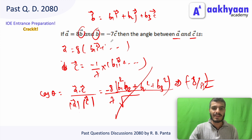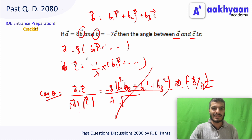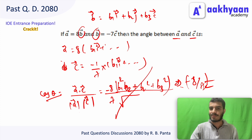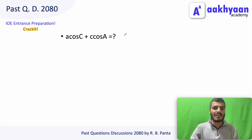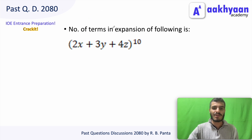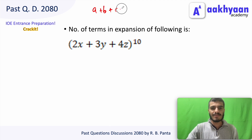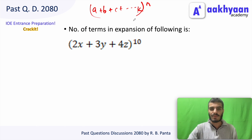The answer is cos inverse of (-8/7). Moving to the next problem: the number of terms in the expansion of (a + b + c)^n. The formula for the number of terms in a k-variable multinomial expansion of order n is n + k - 1 combination k - 1.